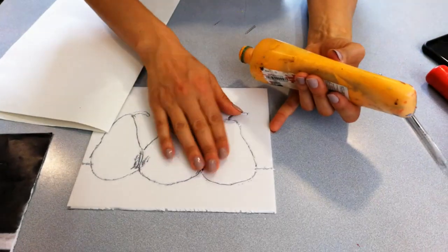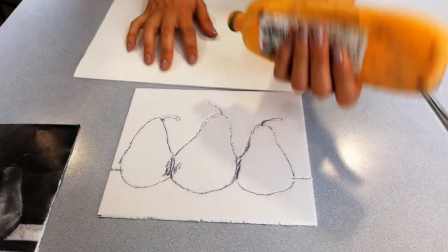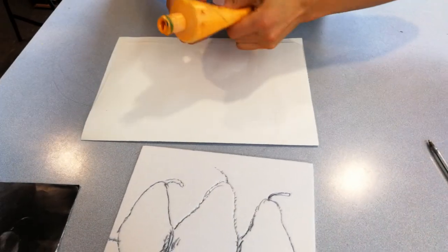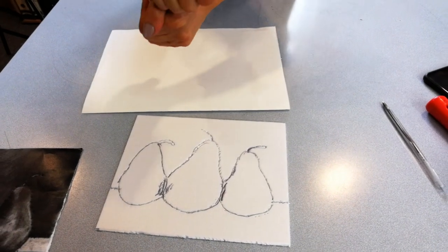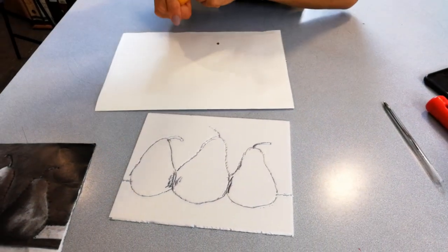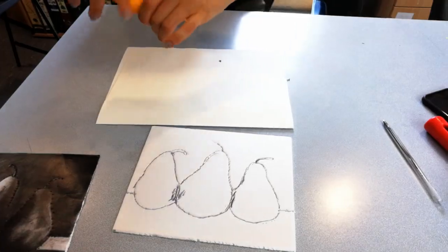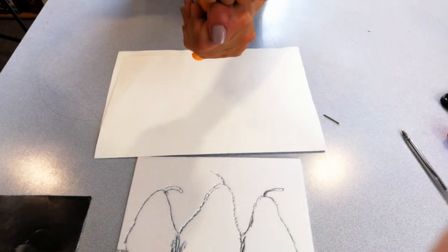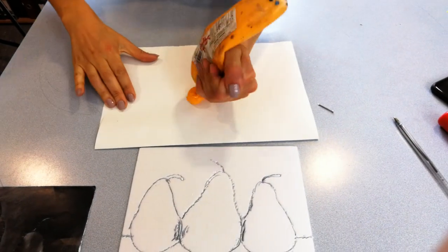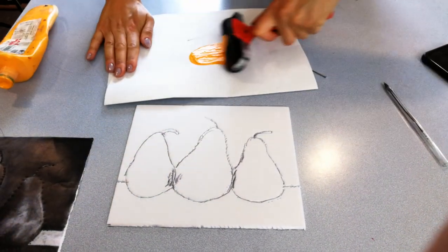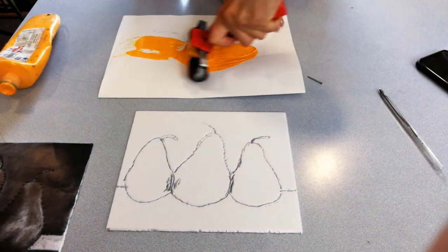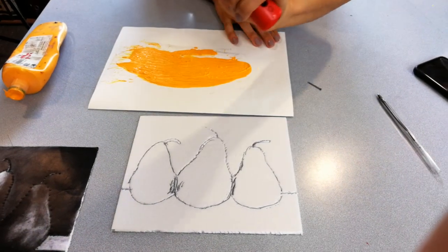So once you've got your outline, take some printing ink. Now I start with a light color because remember we're doing a two-color print. I'm going to roll this out so it's on my roller evenly.